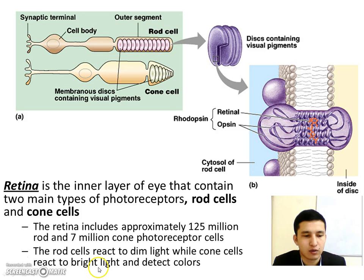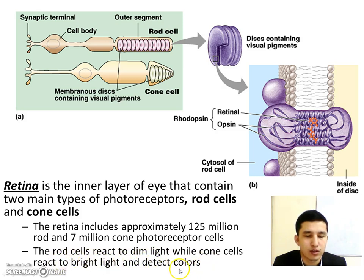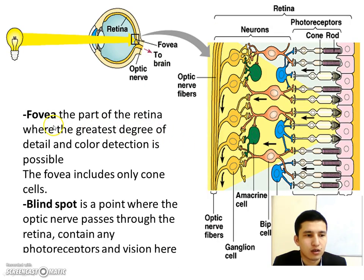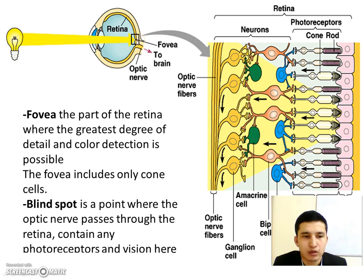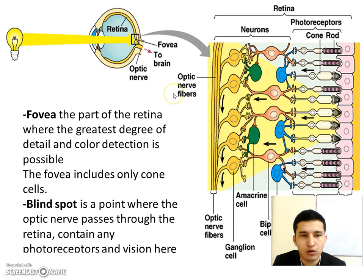Dogs and cats see in black and white because they don't have cone cells, so they can't detect color. The fovea is the part of the retina where the greatest degree of detail and color detection is possible. Most of the light is directed to the fovea, and it contains only cone cells — the cells that detect color light.